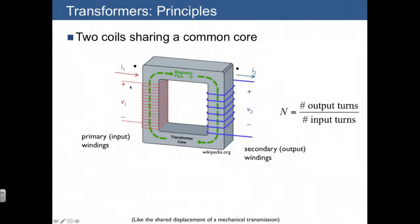The polarity of the transformer is also shown, usually designated by these little dots here that show where the plus sign goes.